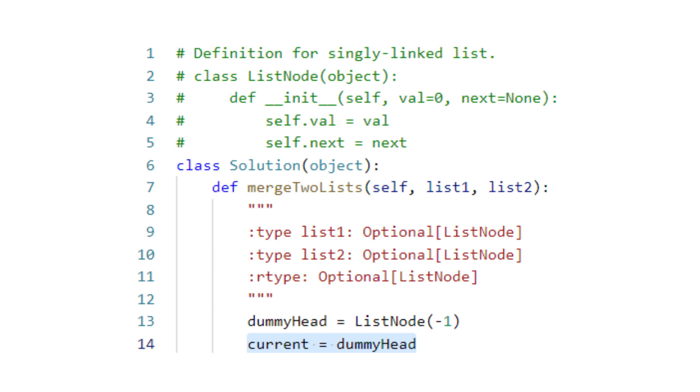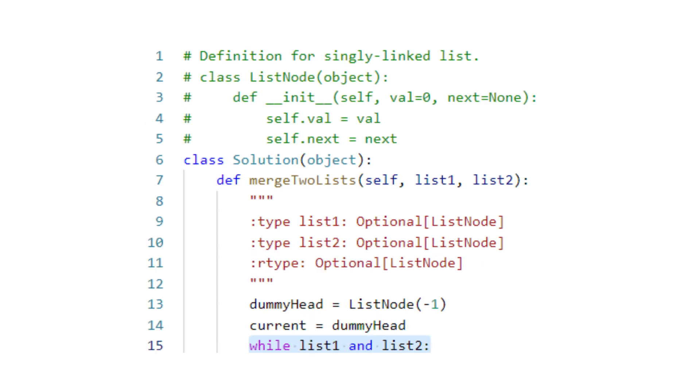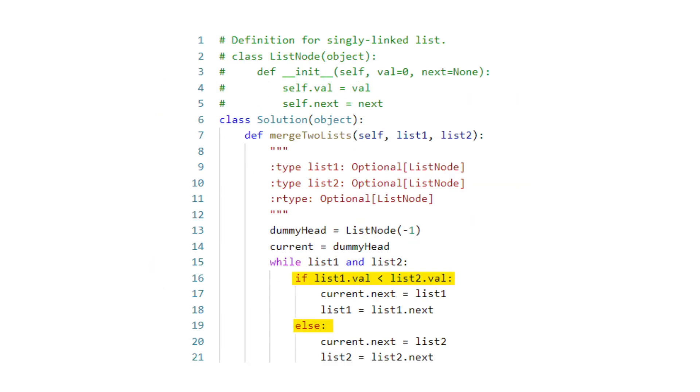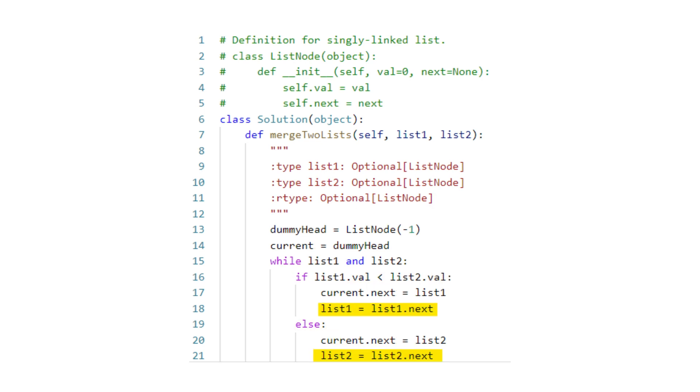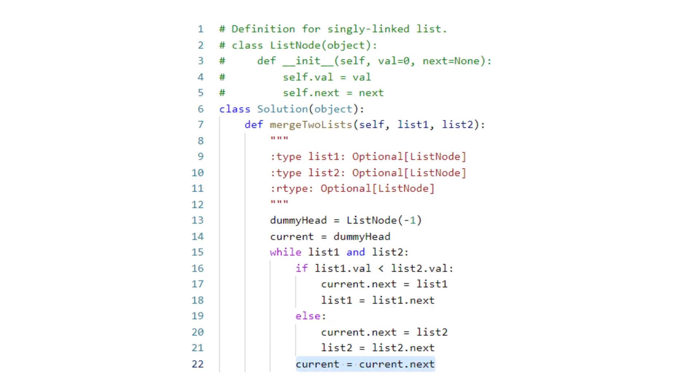Note that having the dummy head allows us to avoid special cases for the head of the linked list. While list one and list two are both not empty, we'll compare the values of the current elements in list one and list two, add a smaller one to current, and move the corresponding pointer to the next element.